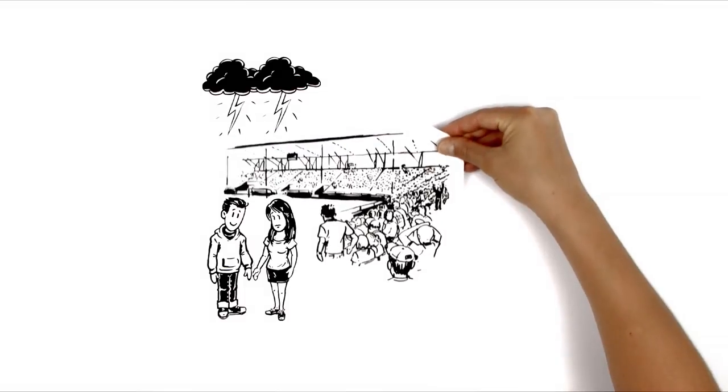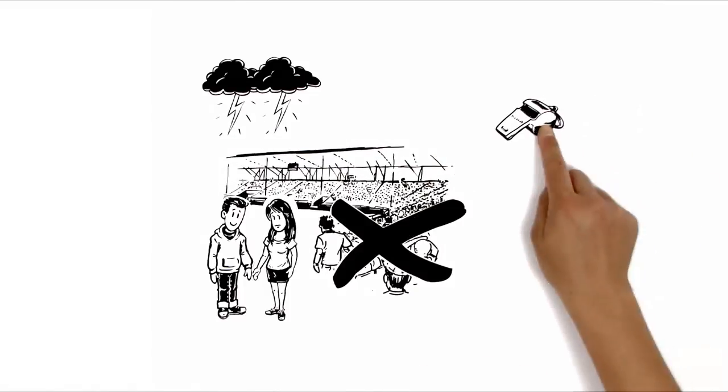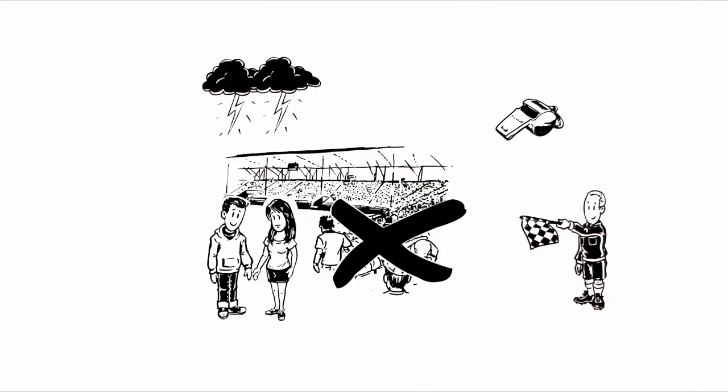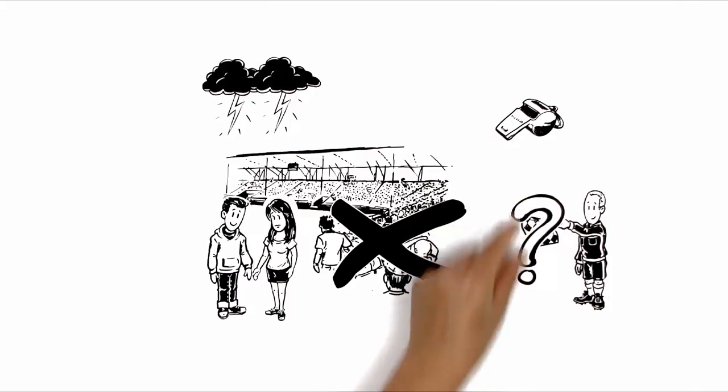Marie never comes along to the stadium because she doesn't understand the rules, especially the offside rule. It's way too complicated. What is it anyway?